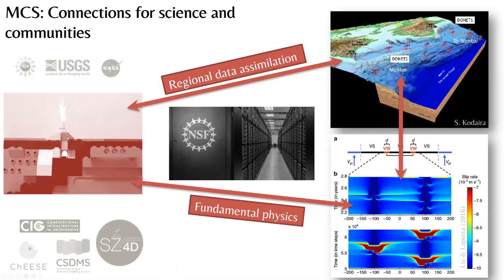The modeling collaboratory is perhaps a framework of numerical codes, sort of like a Lego set, where you have different pieces that are validated and can be put together in different ways — to allow study of the fundamental physics, such as the dynamics of an asperity in isolation, but also put together for a regional system where we have new observational data streams, and we might ask questions about the interpretation of transients observed seismically or geodetically. Both regional data assimilation and fundamental physics are empowered by a large-scale community effort.